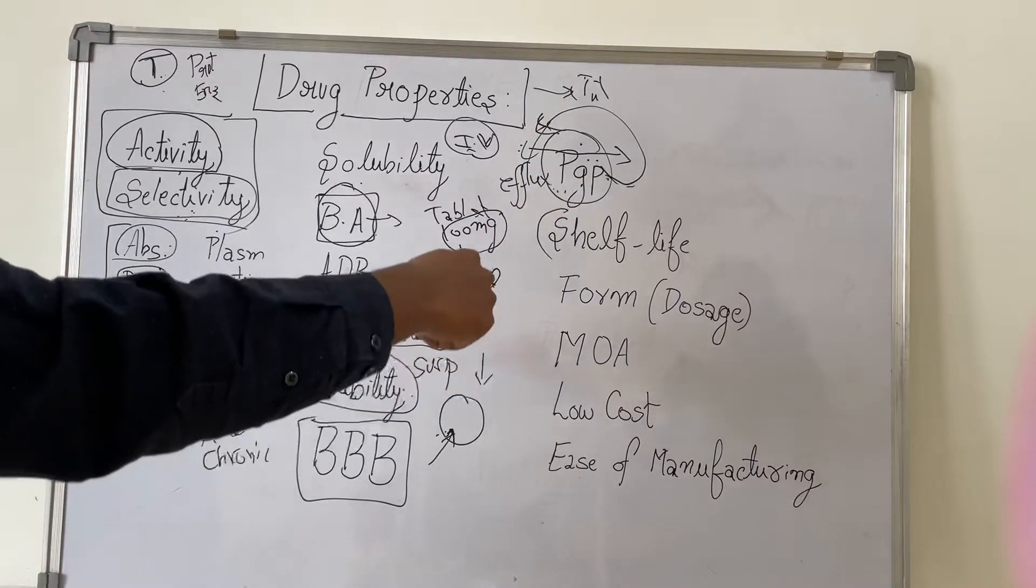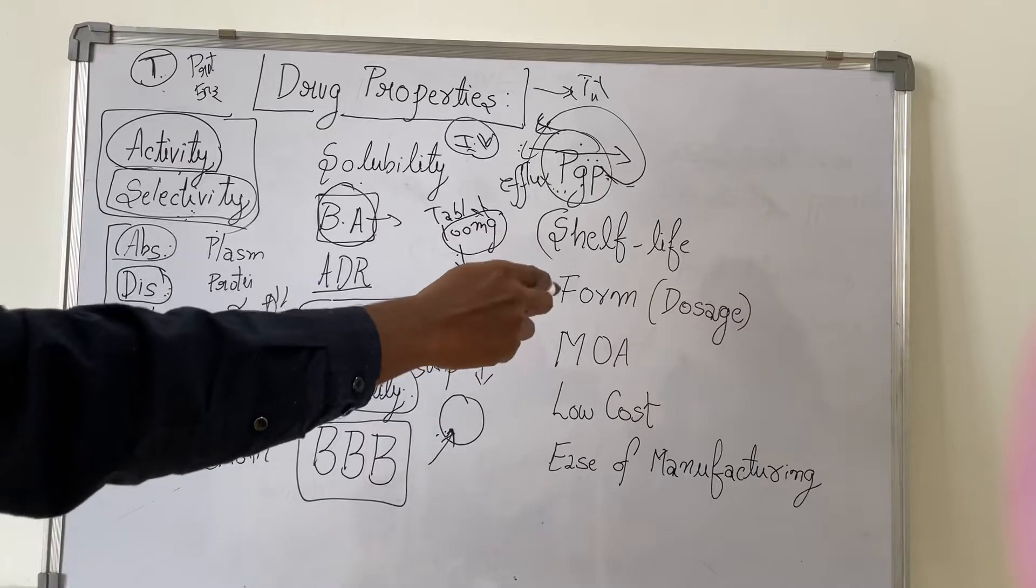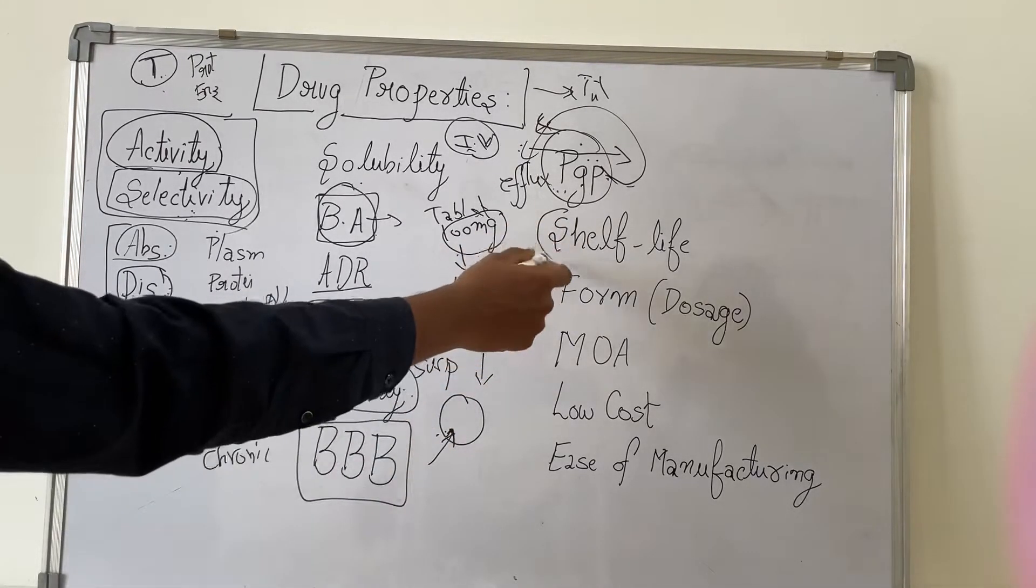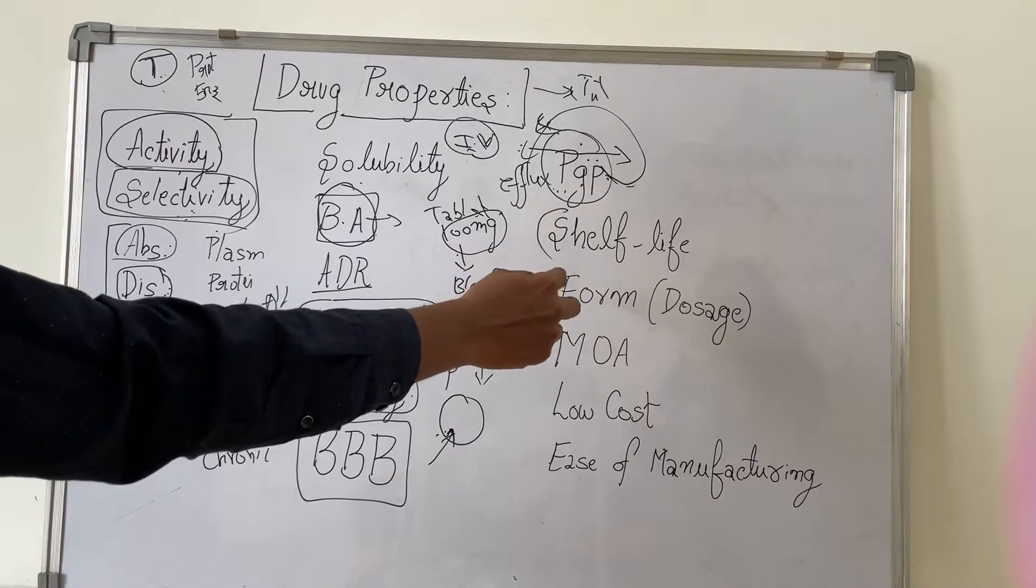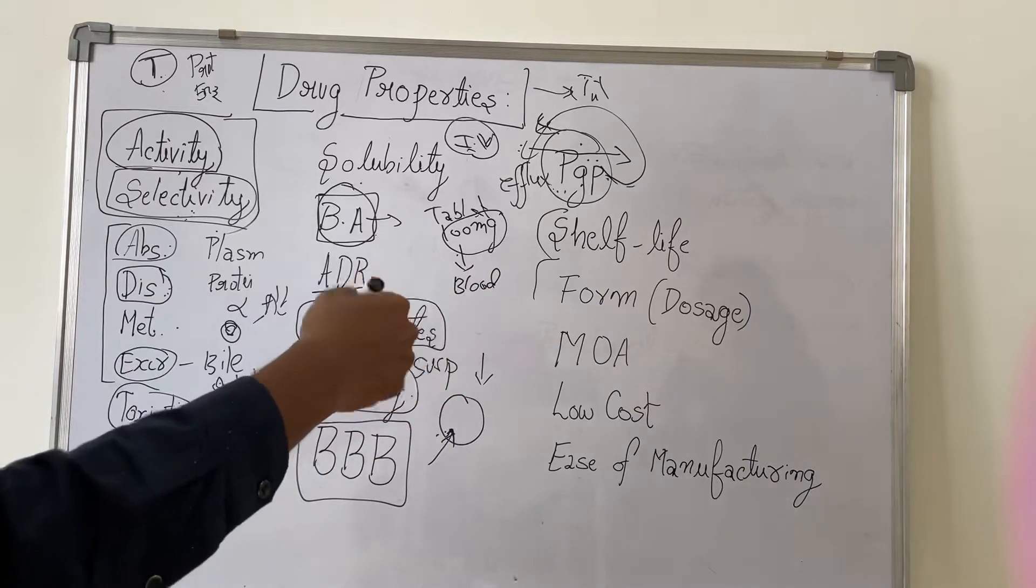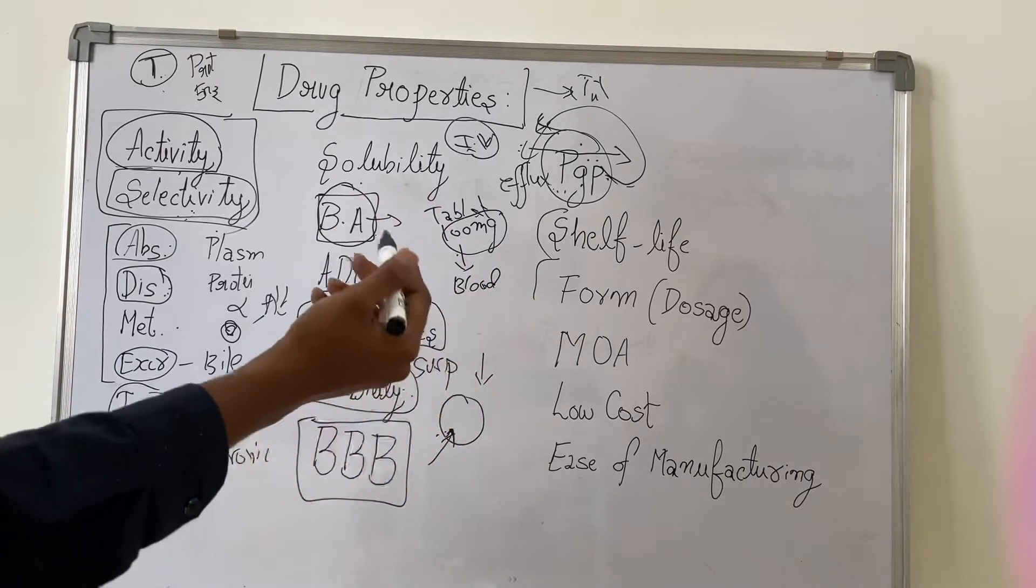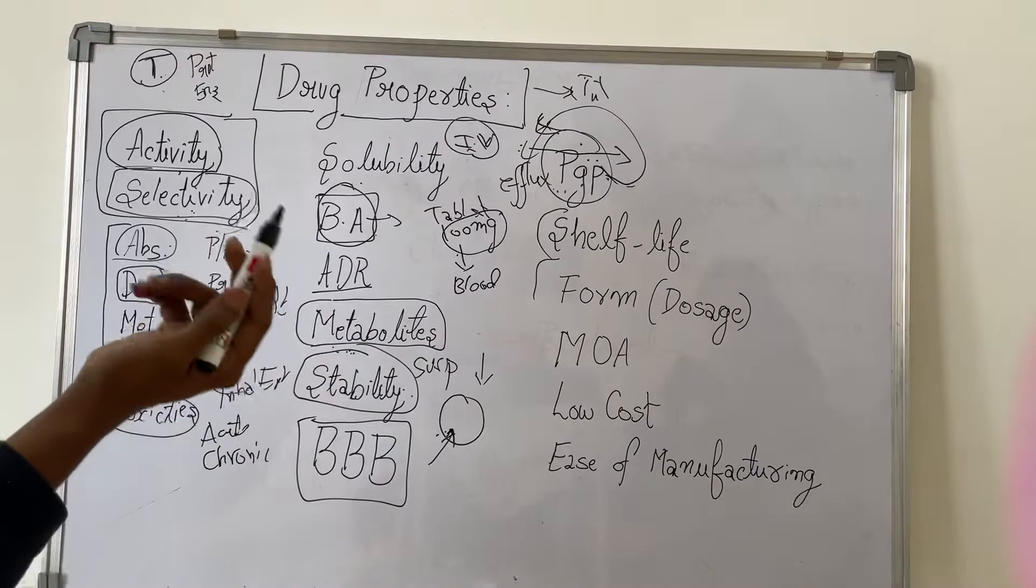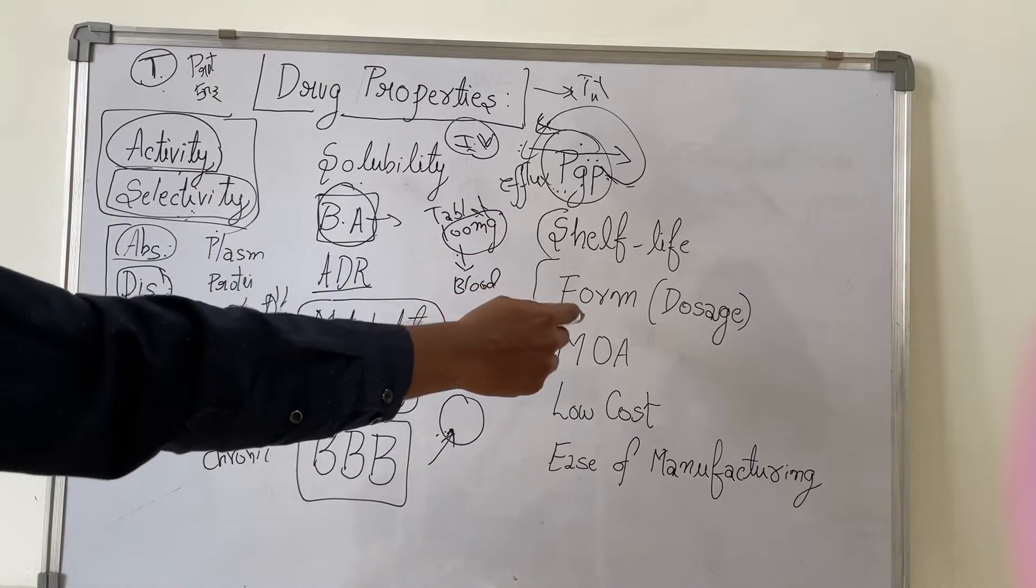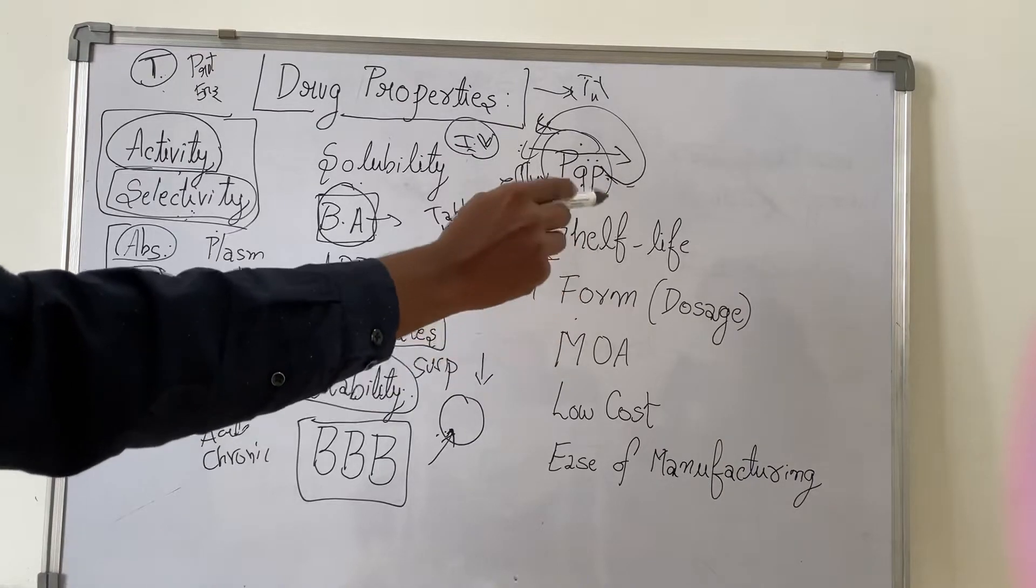Shelf life is similar to stability. Shelf life will be assessed using different studies like freeze-thaw cycling. Next is dosage form. Which dosage form would be better? Usually, every company tries to make their drug in oral dosage forms because it is the most palatable and most acceptable form.